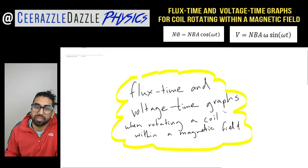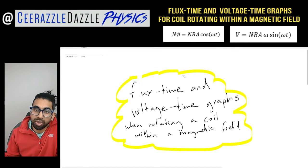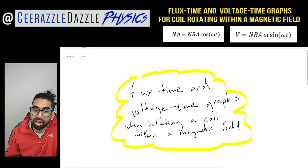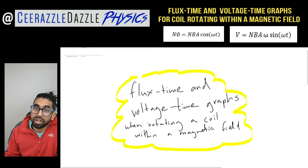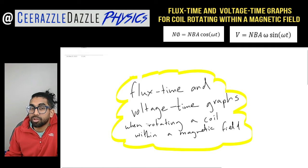Hey everyone, welcome to another session of Surrassal Dazzle Physics. In today's session we're going to be looking at flux-time and voltage-time graphs when rotating a coil within a magnetic field. Before we get going, make sure you hit the like and subscribe button to keep my channel going and keep my content as free as possible.